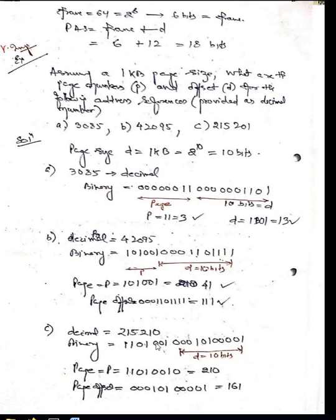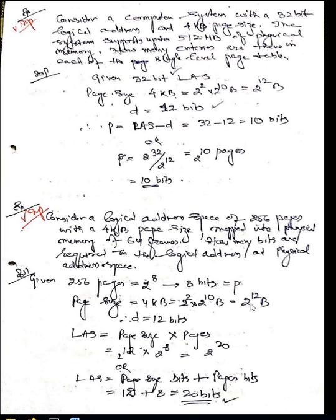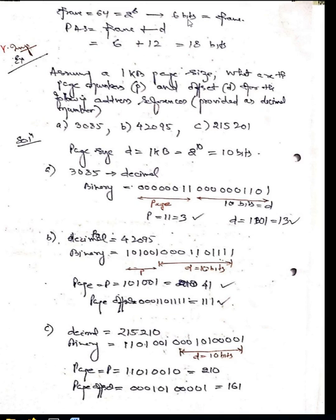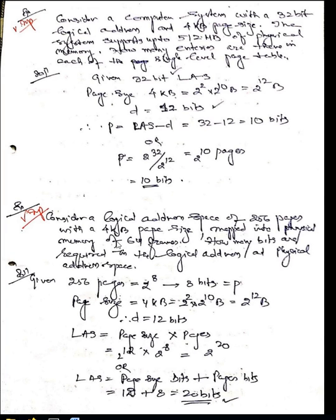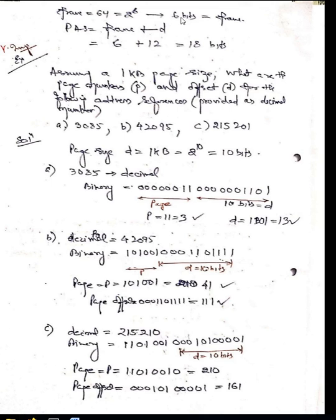Coming to the frame size: page size equals frame size, so frame size is also 12 bits. The problem gives 64 frames for physical memory. 64 frames = 2 to the power of 6, that is 6 bits for the frame number. So the physical address space = frame number + frame size = 6 bits + 12 bits = 18 bits.